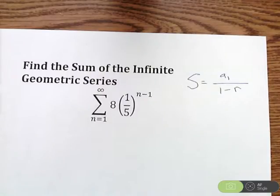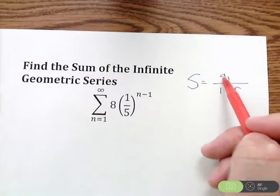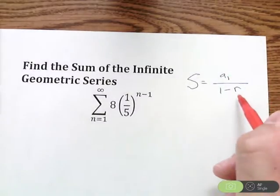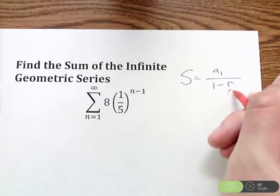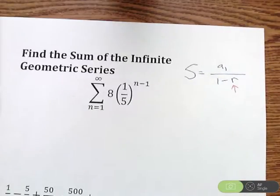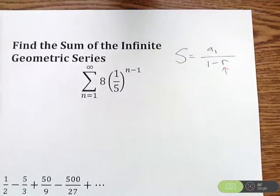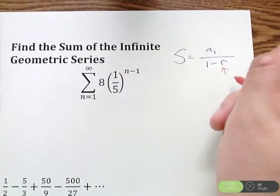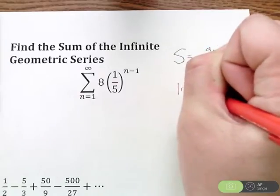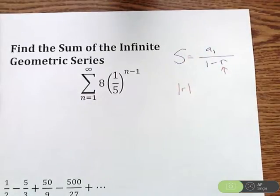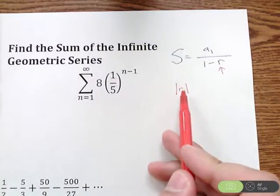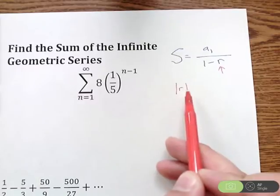Now there are two important things you need for this formula. You need A1, which means the first term. The other thing we need is R. This piece is really important. R is your multiplier - what are you multiplying every single time to get the next term in the geometric series? But the important thing is this: whatever R is, we're going to take the absolute value of it, because sometimes R can be positive, sometimes it's negative. So we take the absolute value, which makes it positive no matter what.